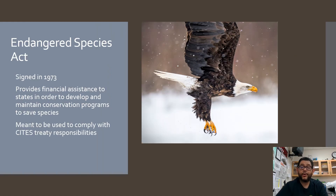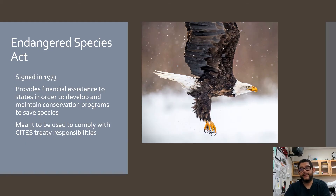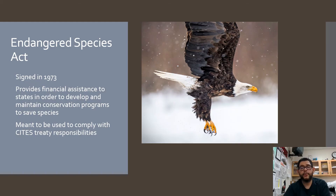Then we have the Endangered Species Act. The bald eagle is probably the most emblematic of this law, along with the gray wolf and the California condor. This is a United States law that says we're going to put aside money and habitat to save certain species. Once a species is placed on the list, there's money and habitat saved aside, and there are fines if people try to mess with those species. This is also meant to be used for complying with the CITES treaty — if a species is traded internationally, the Endangered Species Act is what enables us to fine people or protect those species under US law.